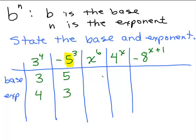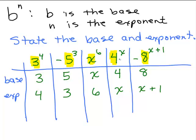Next one: x to the sixth — the base would be x and the exponent would be 6. Next one, the base will be 4 and the exponent will be x. And this last one — same idea — this minus sign is not part of the base. So the base is simply the 8. The base here is 8 and the exponent is x plus 1. We're going to be dealing with problems of this form, where you have a base like 4 or 8 or a fraction, and an exponent that has a variable in it — it might just be x, x plus 1, or 3x minus 9.